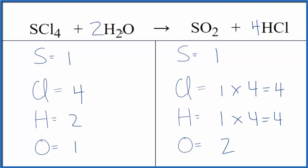Let's put a 2 in front of the H2O, because 2 times 2 gives us 4, balancing the hydrogens. 2 times 1 gives us 2 oxygens. We're done. This equation is balanced.